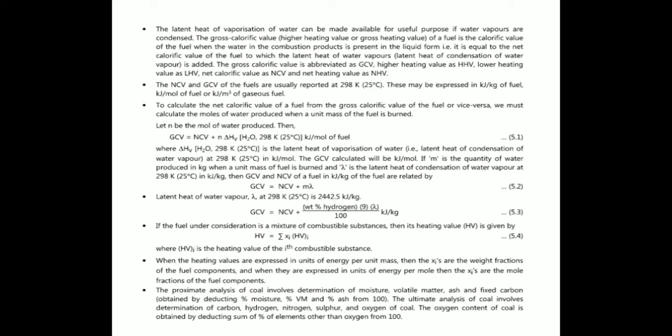Alternatively, GCV = NCV + (weight percent hydrogen × 9 × λ) / 100, in kJ/kg. If the fuel is a mixture of combustible substances, its heating value is given by: H = Σ(Xi × HVi), where HVi is the heating value of the i-th combustible substance. When heating values are expressed per unit mass, Xi are weight fractions; when per mole, Xi are mole fractions.